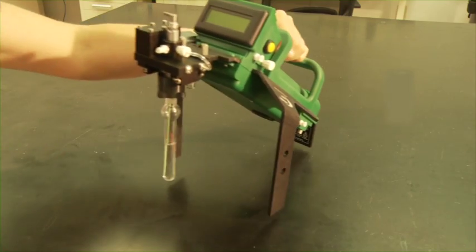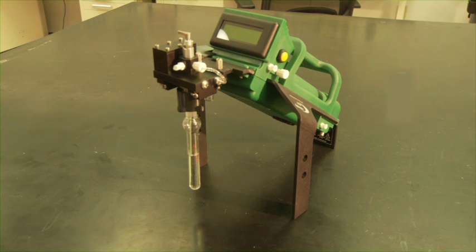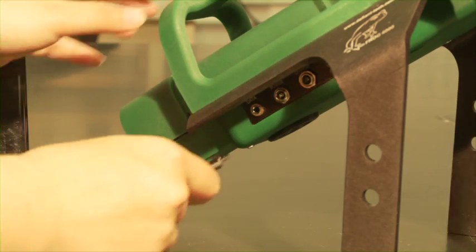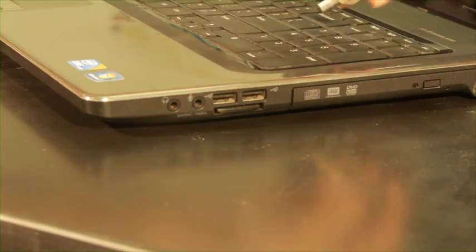To begin the calibration, set the Frog in an area either inside or outside where the air is relatively clean. Next, connect the Frog to your computer and start up the Elvin software.